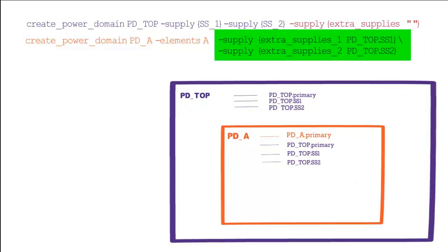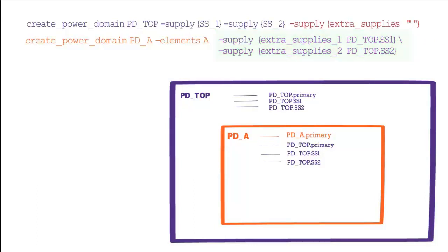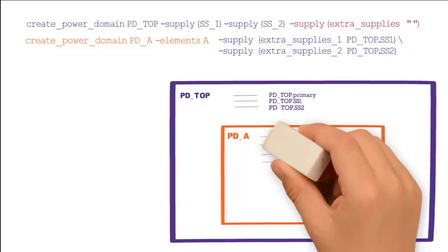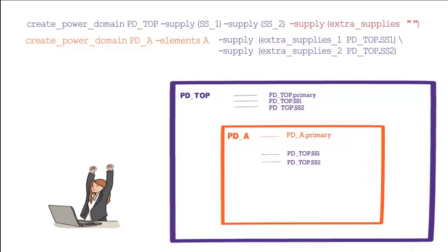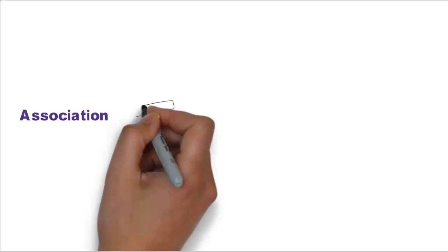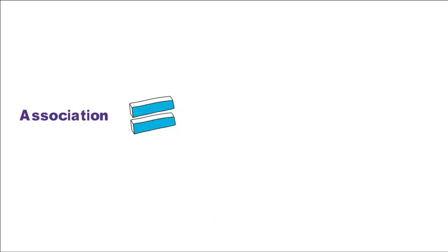To selectively control the availability, provide the required list of supplies using extra_supplies_1_2, as shown. This will remove pdtop.primary from pda in this case. The next concept we will talk about is association.